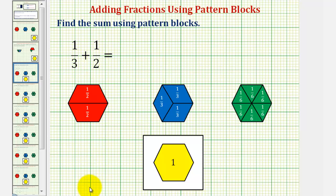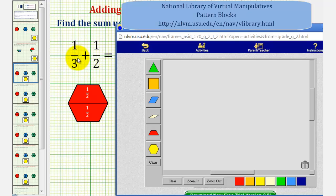So for one-third plus one-half, one-third would be one blue pattern block. And then for one-half, we'd have one red pattern block. Because we're adding, we want to combine these and determine what fraction we can use to represent our pattern blocks.